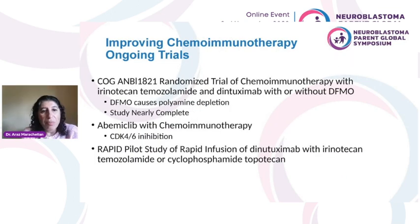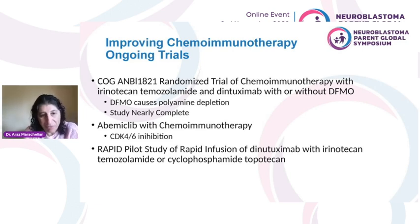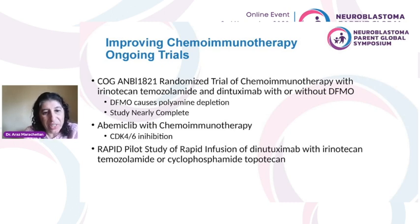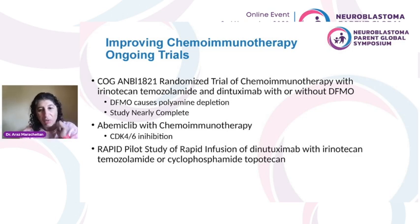ANBL 1821 is a randomized study that added DFMO to irinotecan and temozolomide chemoimmunotherapy and is almost complete. There are also studies looking at chemoimmunotherapy with a CDK4/6 inhibitor, and a rapid two-hour infusion of dinotuximab with chemoimmunotherapy that is ongoing. We look forward to those results.